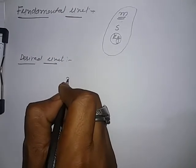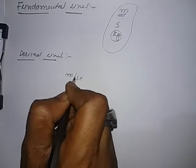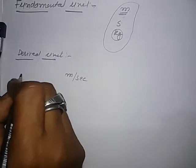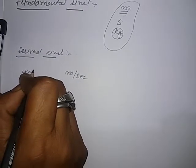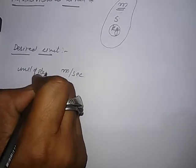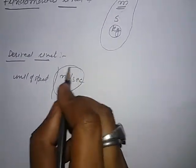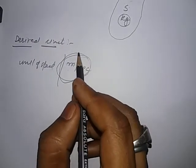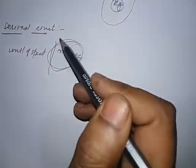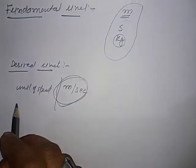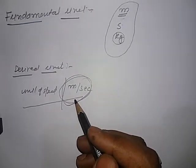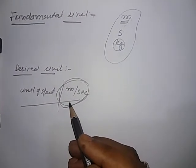Unit of speed is meter per second. This is the unit of speed. It means that unit of speed is depending on the unit of length and unit of time. That's why this is a derived unit. There are many derived units.